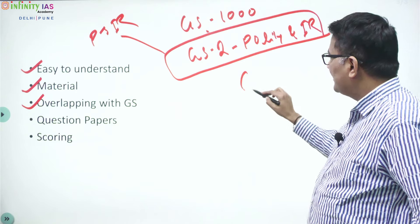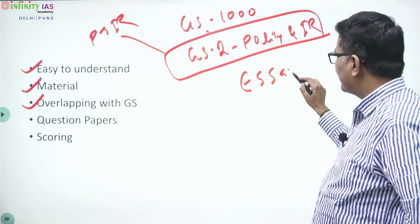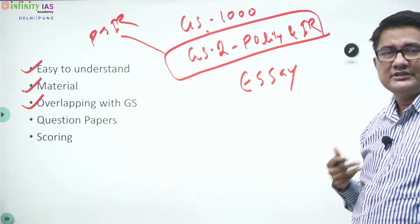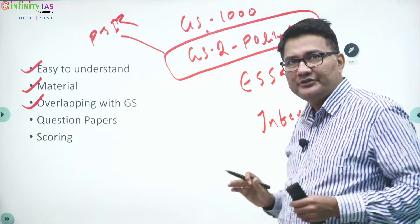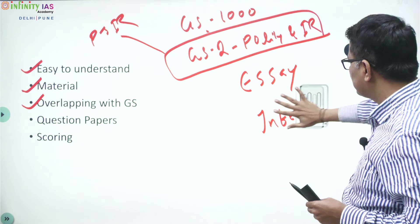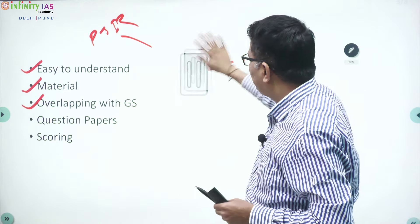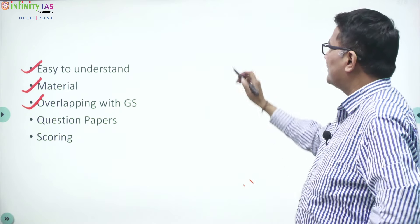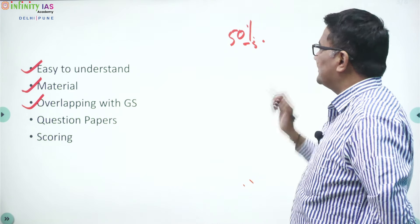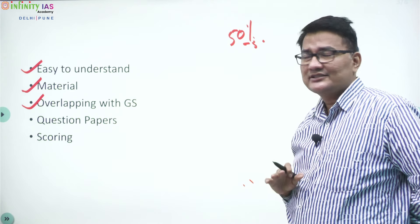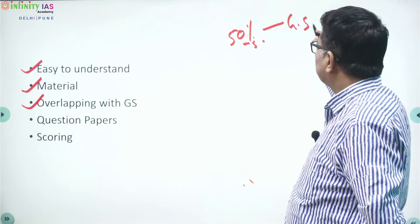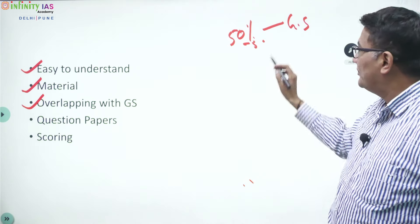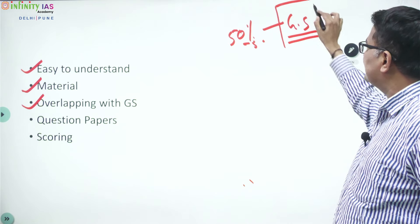This overlap is one of the main reasons why students normally prefer political science. Not only this, political science helps you for writing essay also. Even this year, one essay was from political science only. It also helps for interview preparation. Overall, political science and IR overlap more than 50% of the syllabus with general studies, and this reduces your burden for GS preparation.